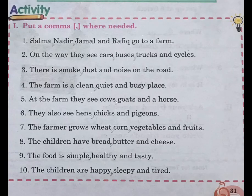Activity: Put comma where needed. I have done it for you. Number 1: Salma, Nadir, Jamal and Rafiq go to a farm. Number 2: On the way they see cars, buses, trucks and cycles. Number 3: There is smoke, dust and noise on the road.